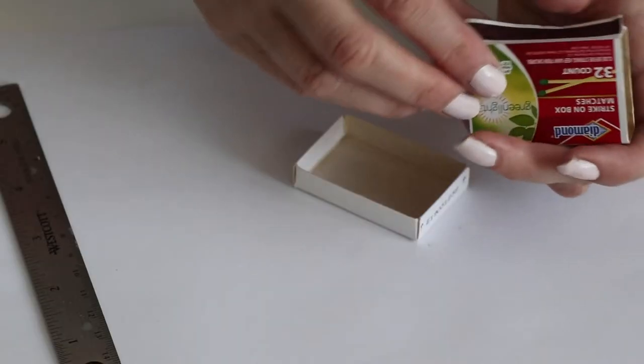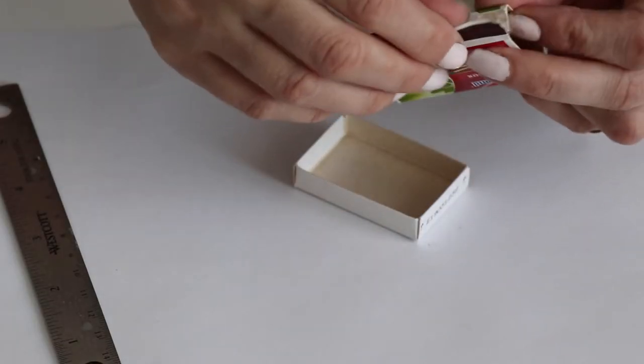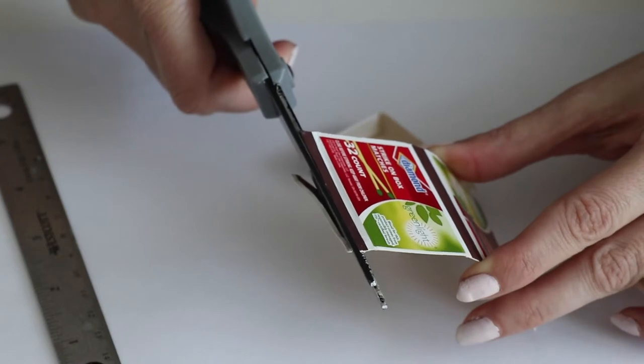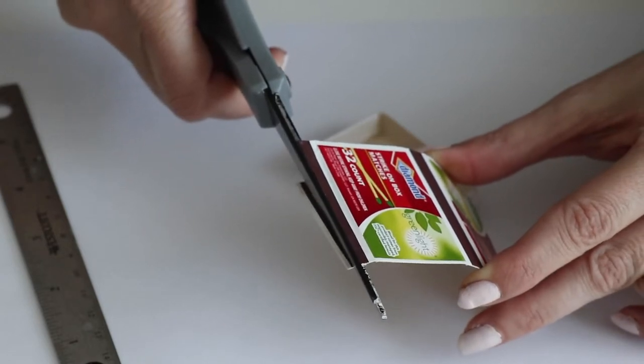Remove the matches and open up the box first using your fingers to pry open, then scissors to separate. Flatten and cut a little above the quarter inch mark to make sure the box is thin enough.